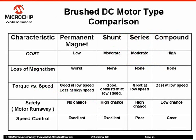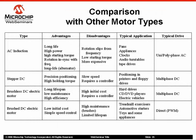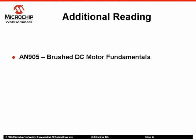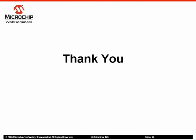Here is a table summarizing the various aspects of each motor type that may make it easier for you to decide which motor suits your application needs. See how brush DC motors compare with other types of motors such as brushless DC motors, stepper DC motors, and AC induction motors. In summary, we covered the basic components of brush DC motors, the four types — permanent magnet, shunt wound, series wound, and compound wound — and how they operate. For additional information, refer to application note AN905, Brush DC Motor Fundamentals, available at microchip.com. My name is John Mouton, and I thank you for downloading this web seminar.